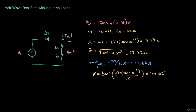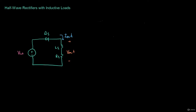We can compare this angle to time by knowing that the period of a 60 Hz sine wave is 16.6 ms — our input voltage is at 60 Hz. Delaying by 37.02 degrees and dividing by 360 degrees (one full cycle) gives us approximately 1.7 ms. So the output current is delayed in time by approximately 1.7 ms after half of the cycle. To summarize: I_out_peak equals 13.58 amps, and angle phi converted to time equals 1.7 ms.